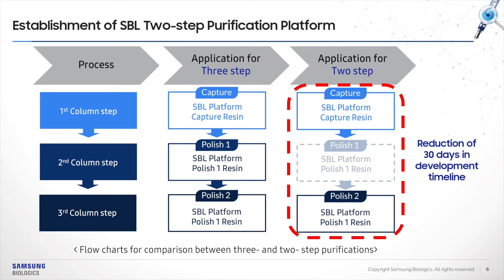Eliminating an additional chromatography step is desirable for lowering process cost and shortening development time. Simply, we expect that if the second column can be deleted from the purification platform, a development timeline reduction of 30 days can be achieved. Therefore, we focused on the development of a two-step purification platform for production of monoclonal antibodies.